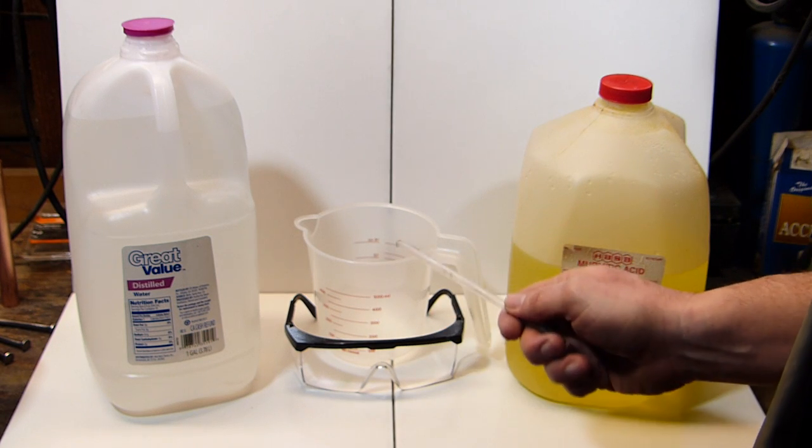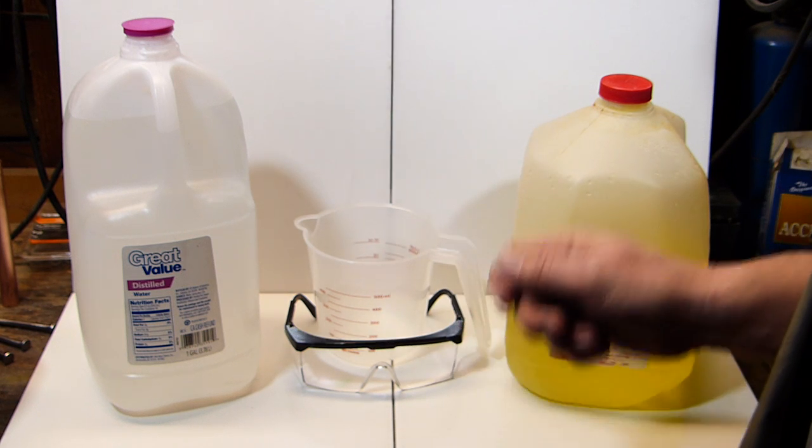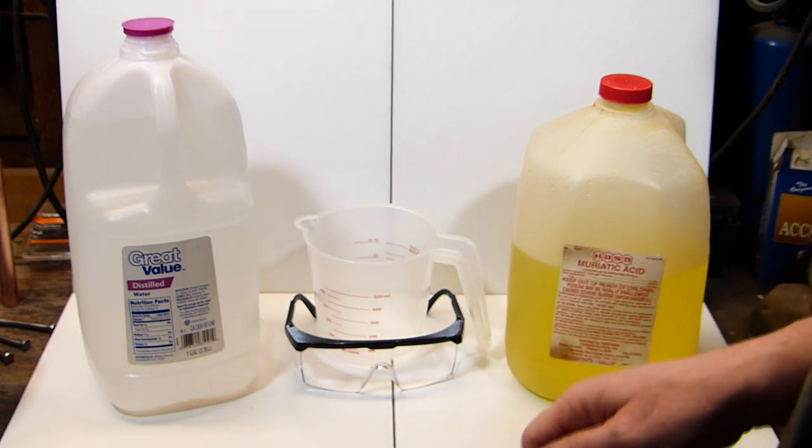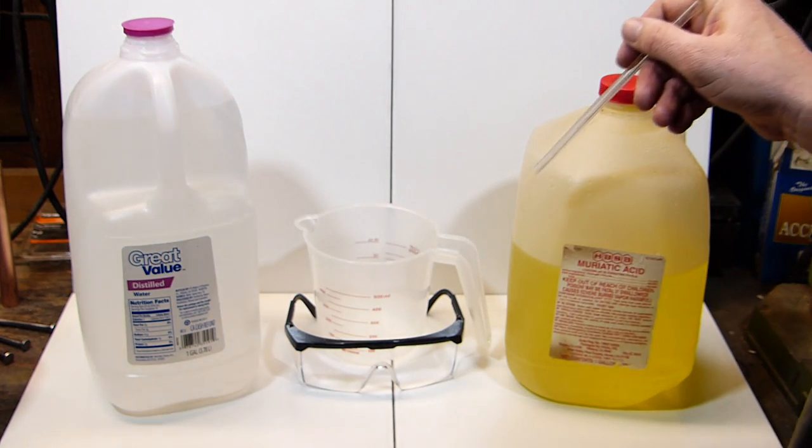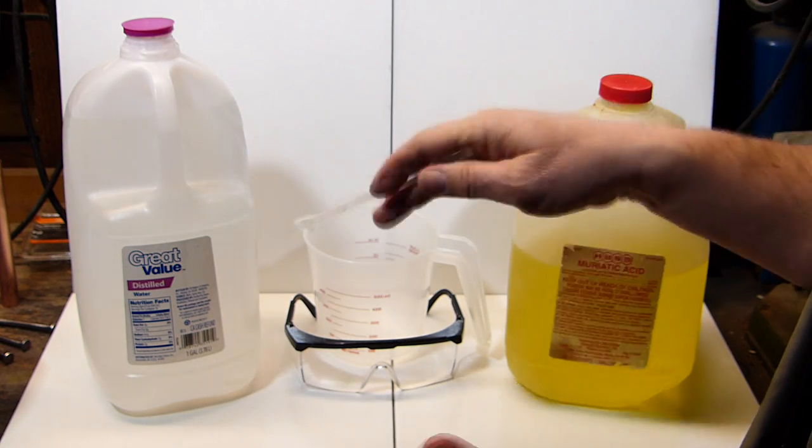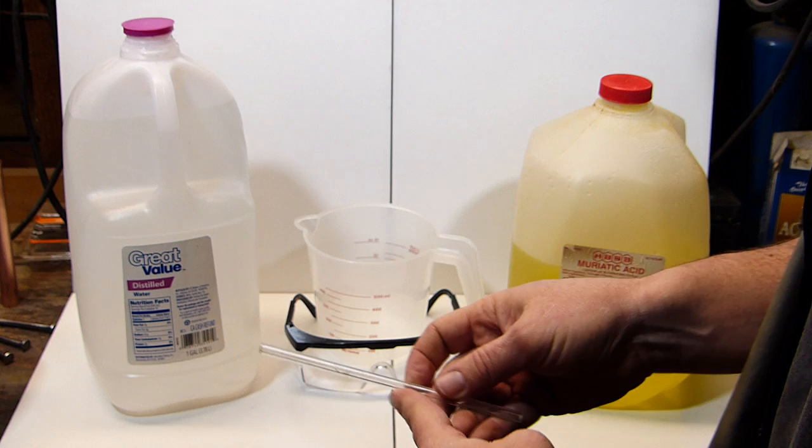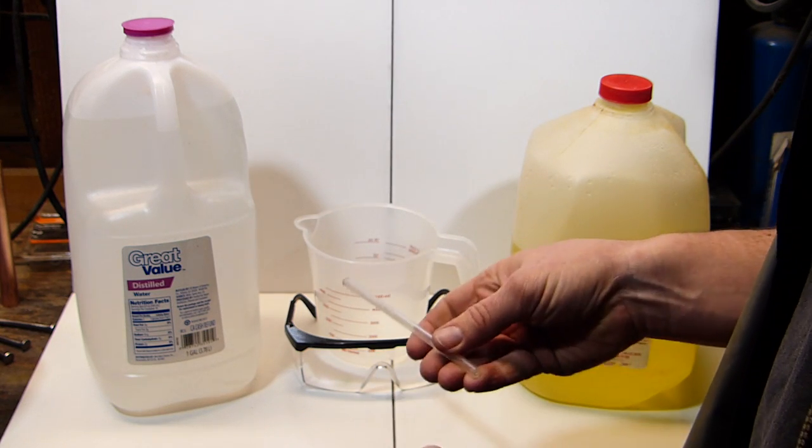All right, a super fast video on what I think is probably the simplest way that you can possibly copper plate a piece. You won't need any of the fancy chemicals, the binders, the cleaners, the metal salts. You're going to use nothing more than a little bit of distilled water and also some muriatic acid. And between those two things, a piece of copper and the object that you wish to plate, you're going to get a thin but very durable copper plate.